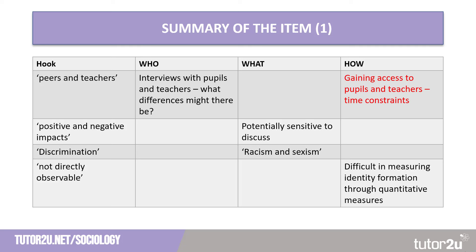We can develop that point by talking about why there might be time constraints: teachers and pupils may have busy schedules and lots of work, and you need to access them during school hours. Linking to the what — the topic of pupil identity — will the school provide access given the nature of the topic? The item hints at a potentially sensitive topic; if the school is found to negatively impact pupils' identities, they may refuse access due to reputational concerns, negative publicity, and the impact on enrolments. There we've linked the who, the what and the how.